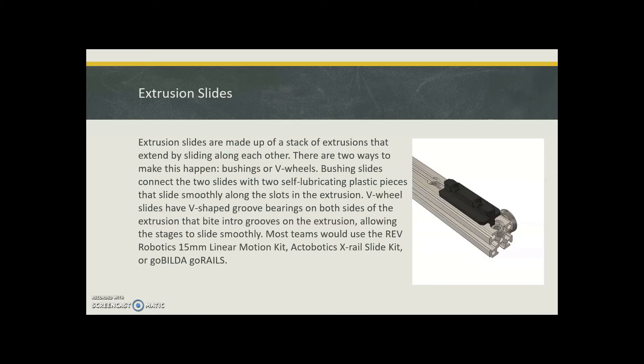Extrusion slides are made from stacks of extrusions that extend by sliding along each other. There's two ways: you can use bushings or V-wheels. Bushing slides connect two slides with two self-lubricating plastic pieces that slide smoothly along the slots in the extrusion. V-wheel slides have V-shaped groove bearings on both sides of the extrusion that bite into grooves on the extrusion, allowing the stages to slide smoothly.